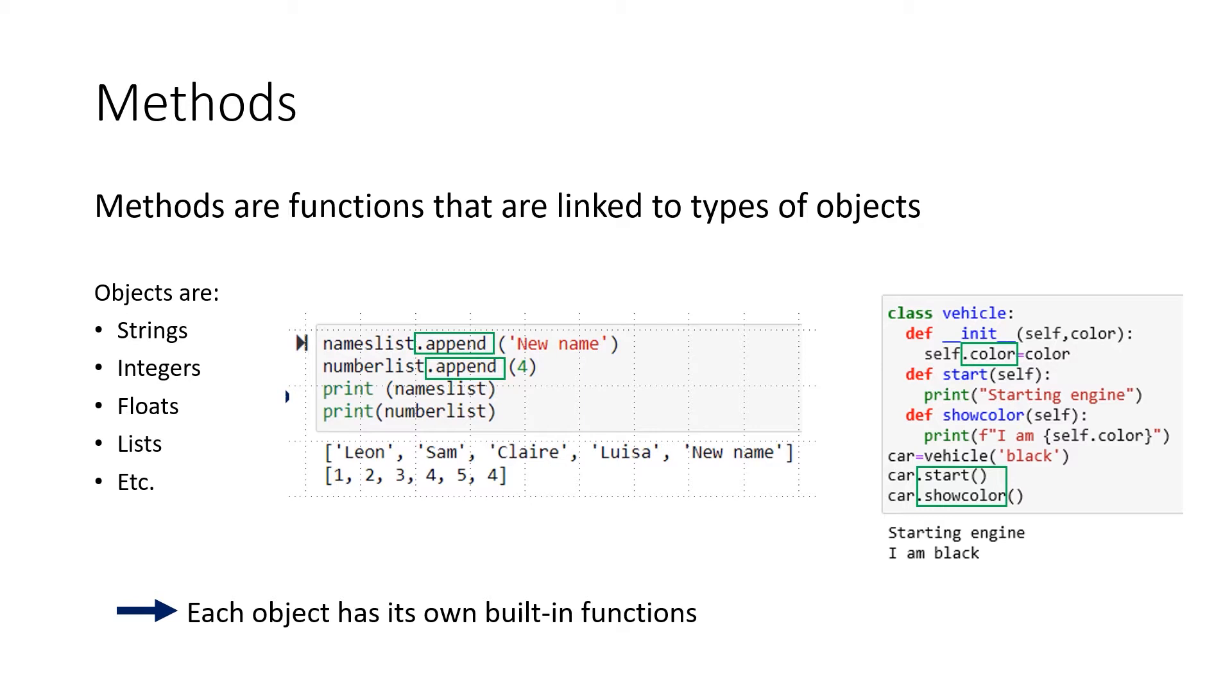If we go now into a practical example, we can see here that we applied our append method to the object list. In this case it's called names list. And first time we added new name, and at the second time we added four. So both times we actually linked our append method to our list and actually also changed the content of the list. Often a method can actually change the content of an object, and that often indicates to you that you're using a method.